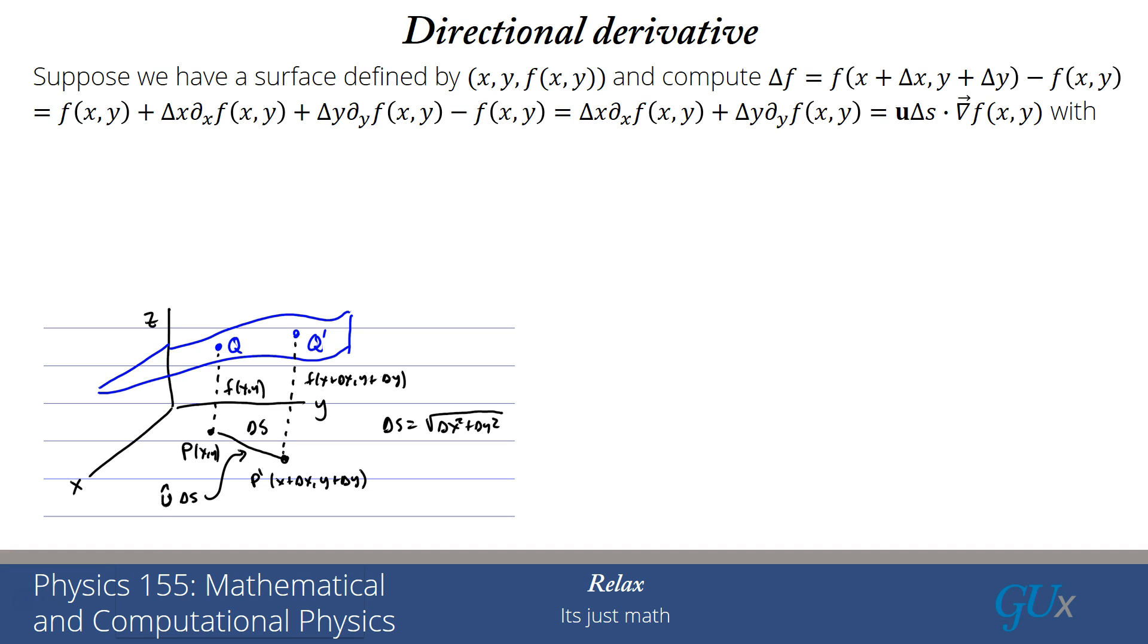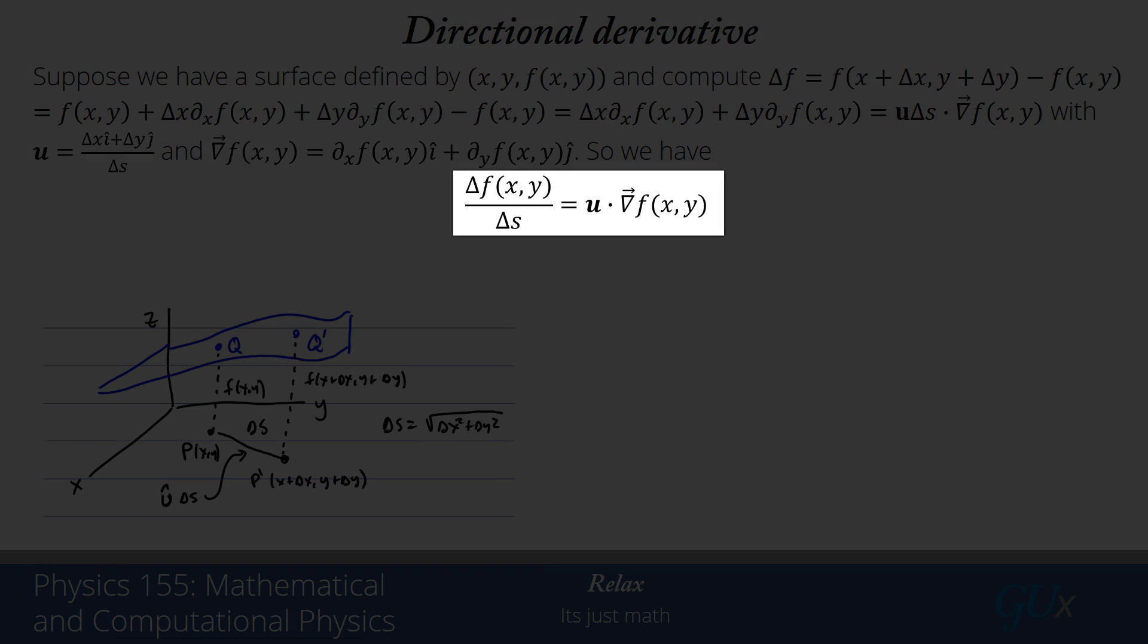I'm going to rearrange those derivative terms into a unit vector multiplied by delta s. Remember delta s is just the square root of delta x squared plus delta y squared. It's the hypotenuse of the delta x delta y right triangle. And that ends up being dotted into the gradient of f of x, y. And just to be sure we're all on the same page, u is equal to delta x times the unit vector in the x direction plus delta y times the unit vector in the y direction divided by delta s. The gradient of f is the derivative of f with respect to x multiplied by the unit vector in the x direction plus the derivative of f with respect to y multiplied by the unit vector in the y direction. And if I then solve for u dot the gradient, I find that's equal to delta f of x, y with respect to delta s.